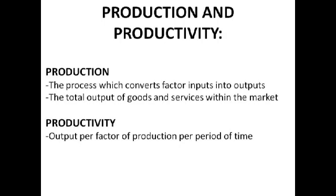The big one is labour productivity, which is output per worker per period of time. In general, it's total output per time period divided by number of units of factor. Total factor productivity is total output divided by total input.